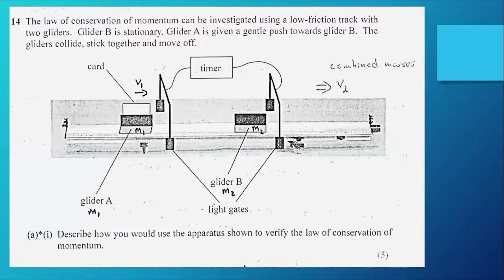Let's look at this. The law of conservation of momentum can be investigated using a low friction track with two gliders. One is stationary, one is given a gentle push, they stick together and move off. We haven't seen the question yet, we've got a diagram.